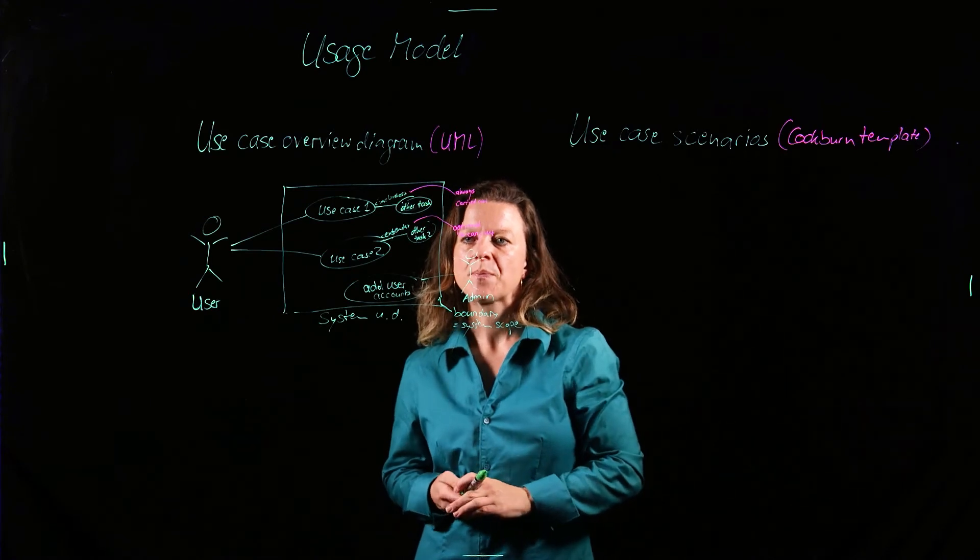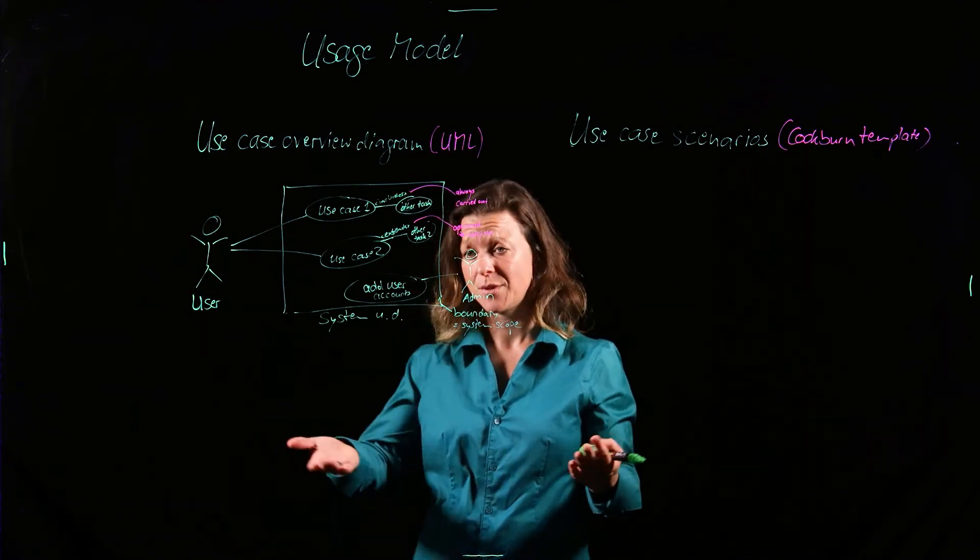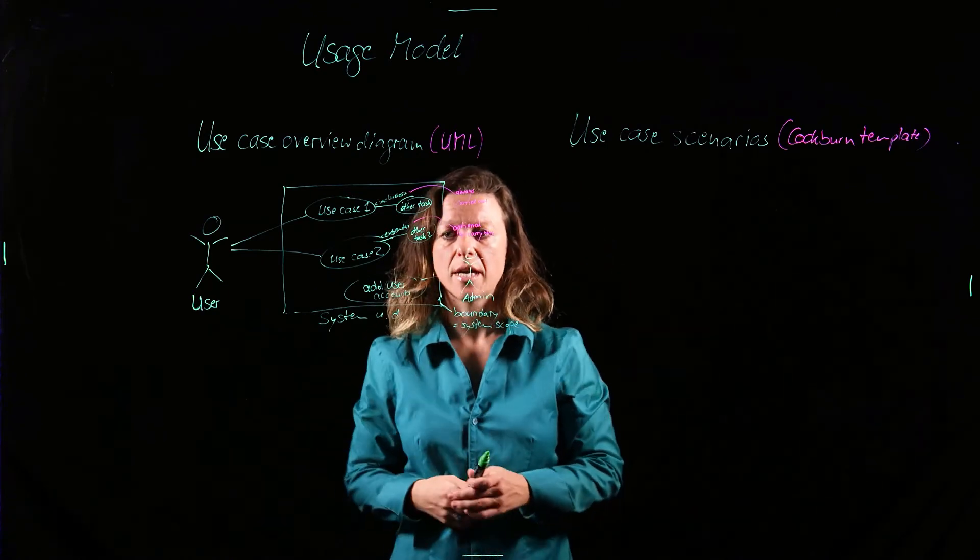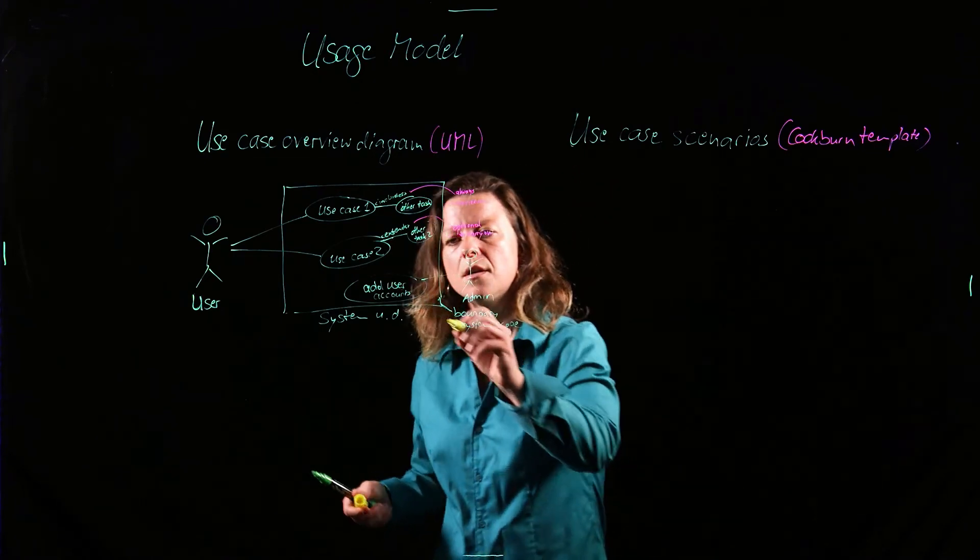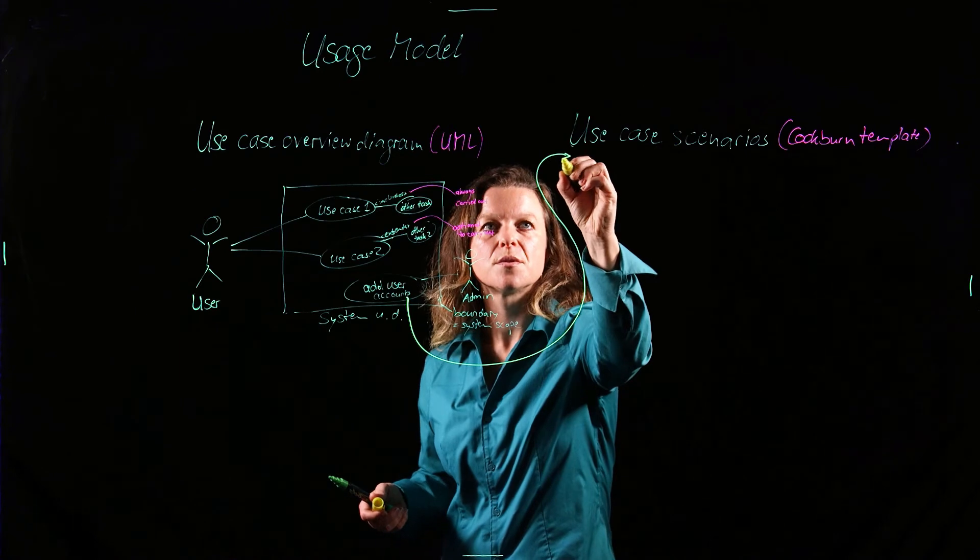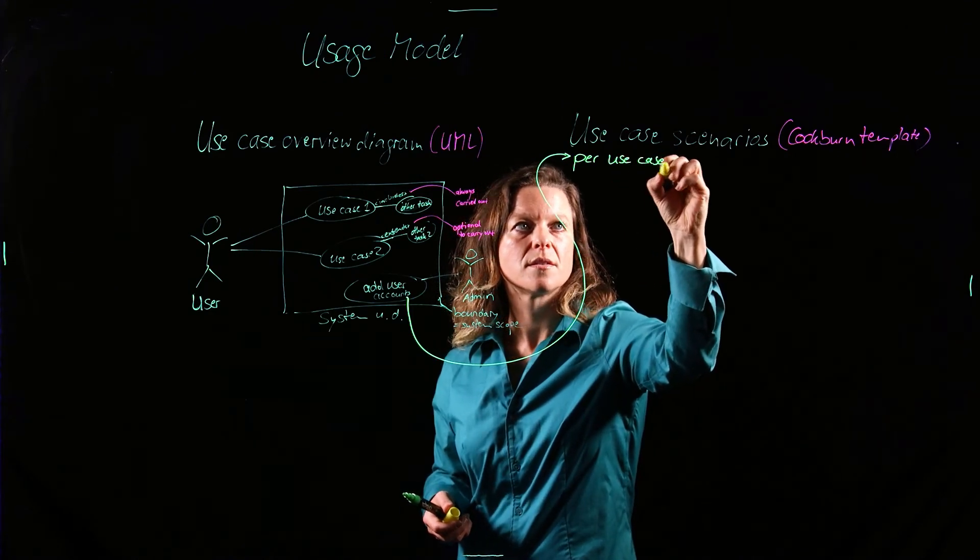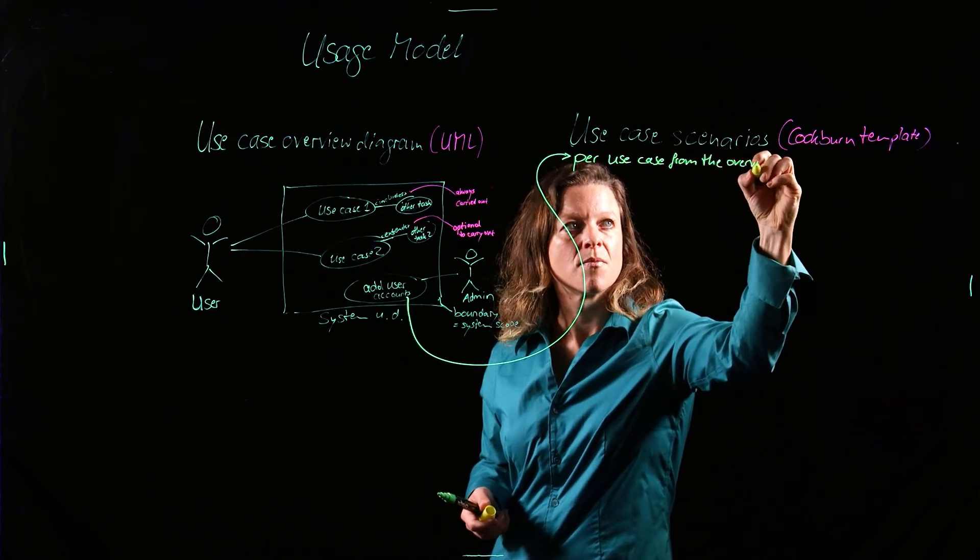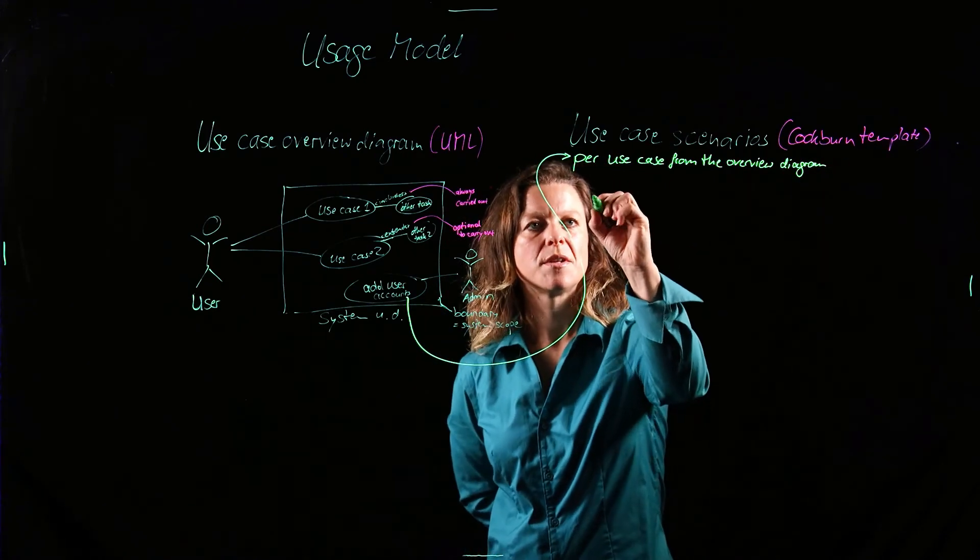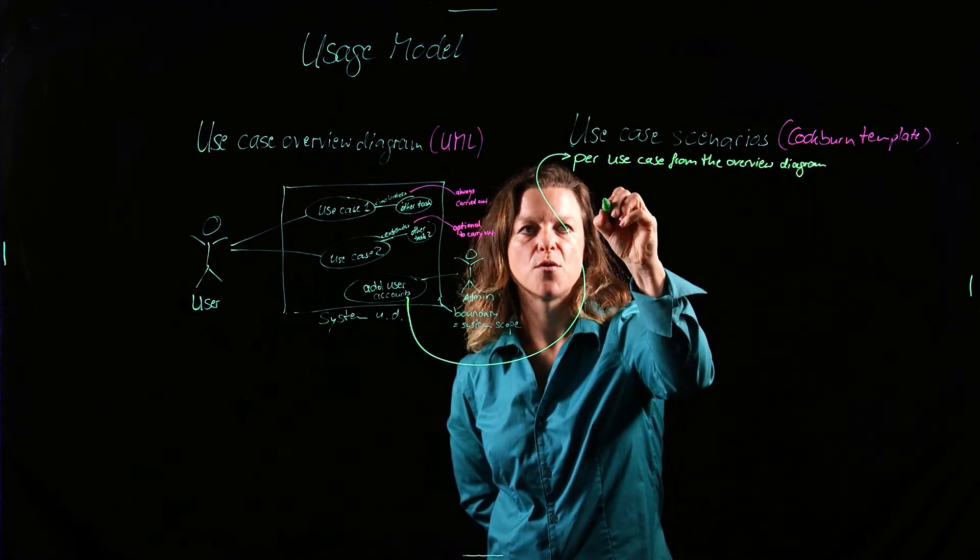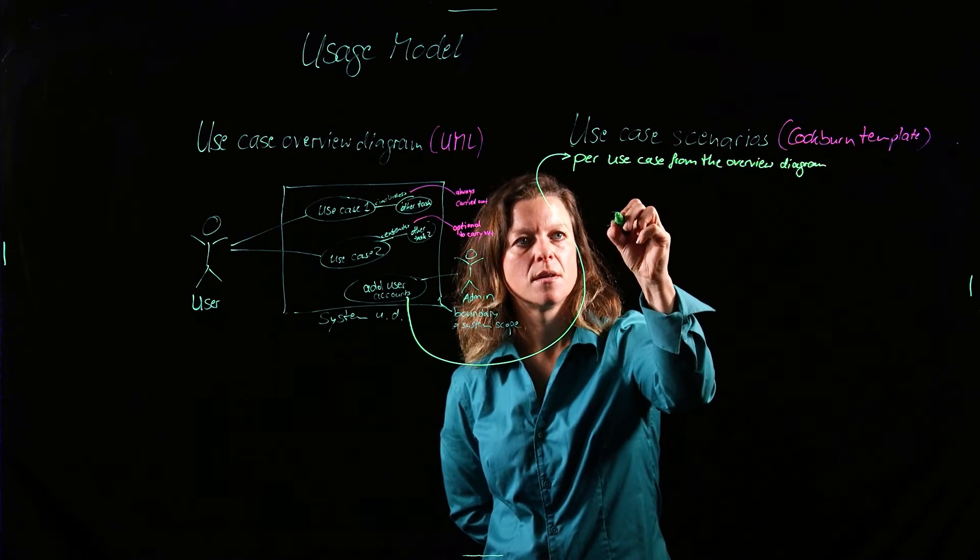So that's our overview diagram. Now, if we pass that on to our system developers and say, here, start programming the thing, they would say, well, you're not giving me enough. I know the admin should be able to add user accounts, but I have no idea what the interaction with the system actually looks like. So therefore, we detail this with the use case scenarios. So we have one use case scenario per use case from the overview diagram. And this template is going to specify a couple of meta information items that I'm going to skip for now, but you will find them in a template online. But what it describes in detail is the scenario main steps.